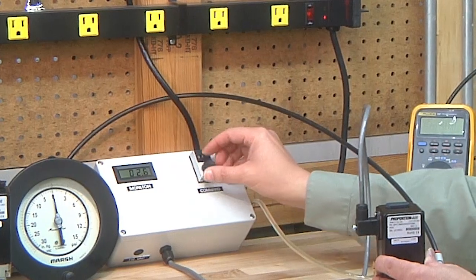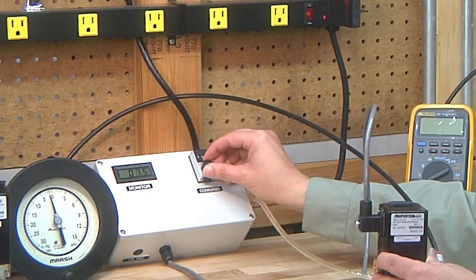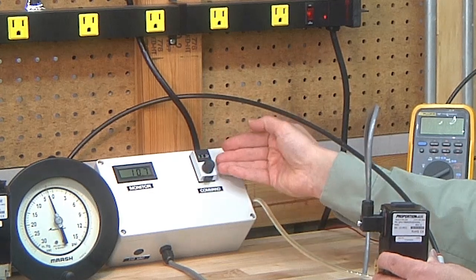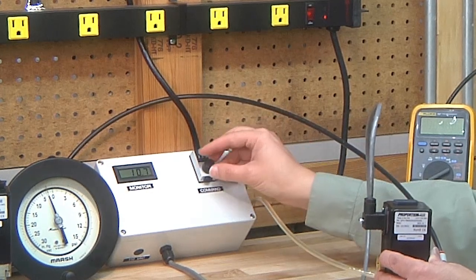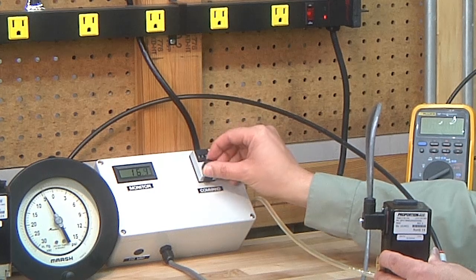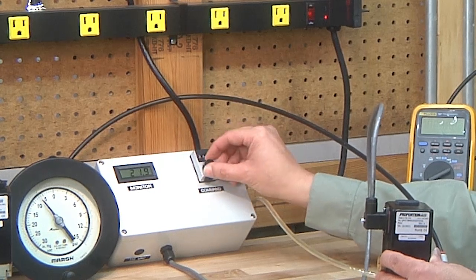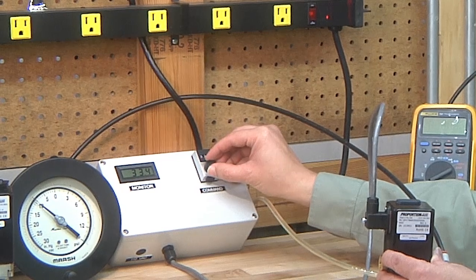Right now we're going to increase the electronic command signal using this digital potentiometer. You can see as I increase the command signal, the vacuum level is increasing as well.